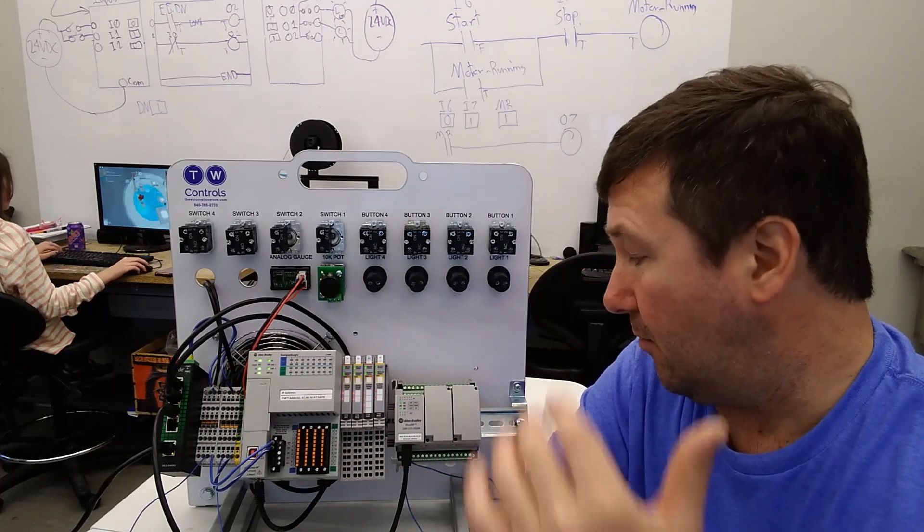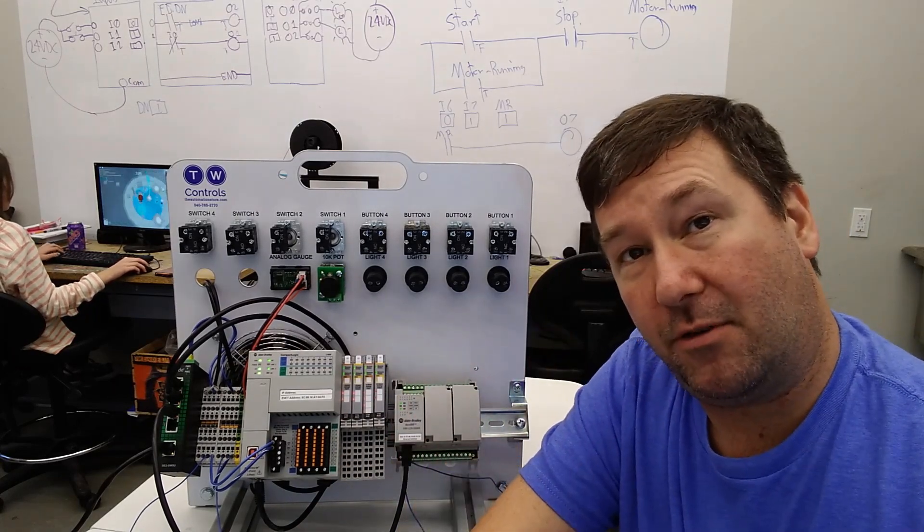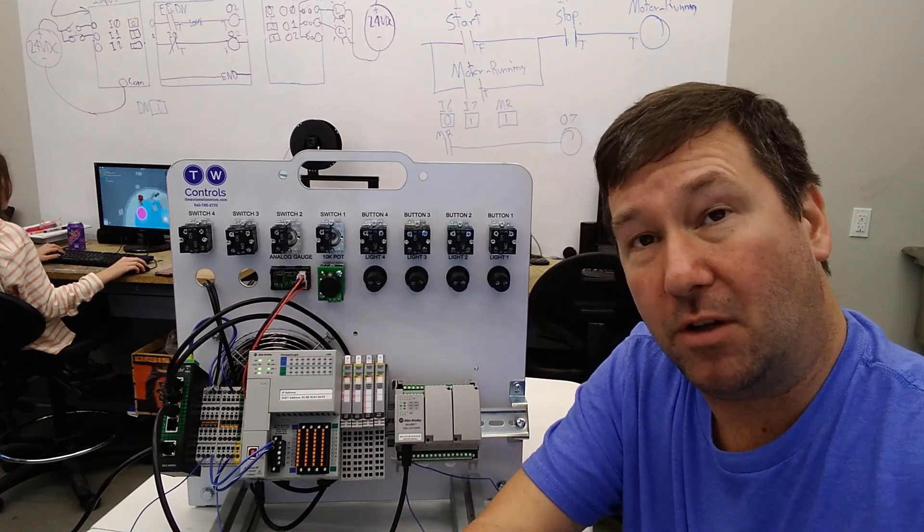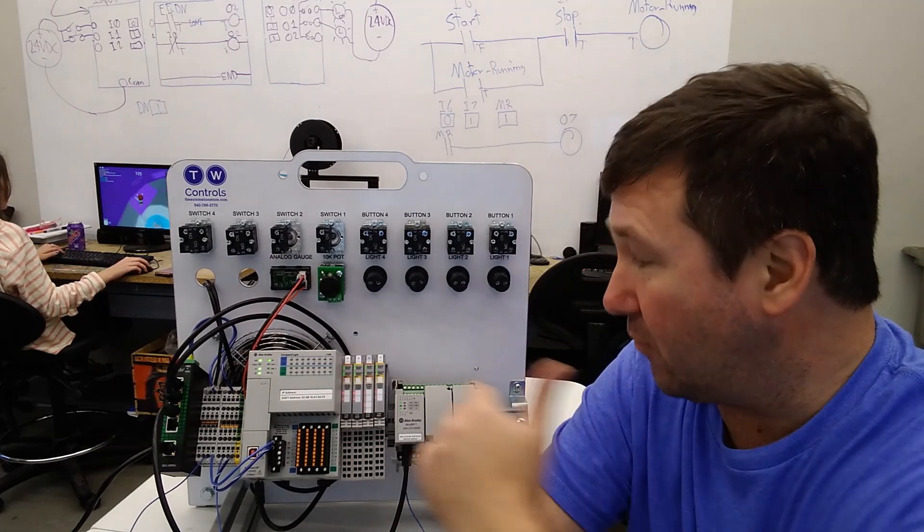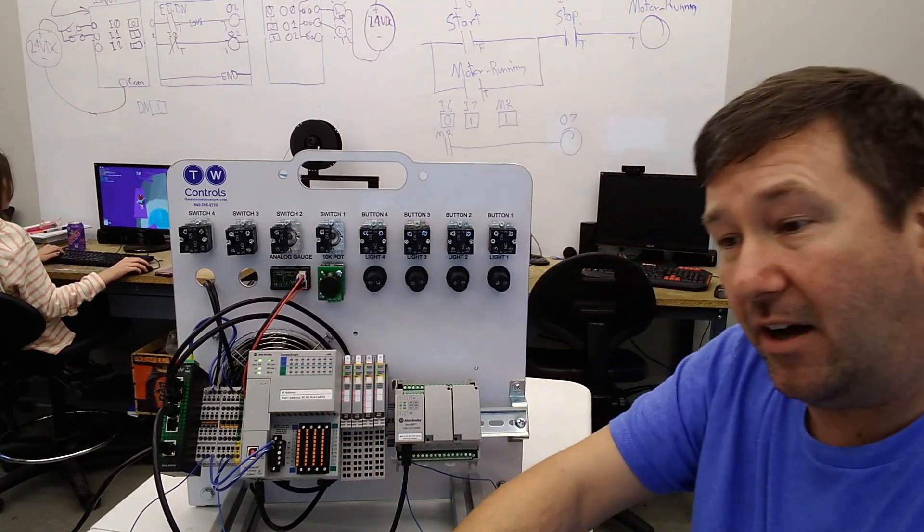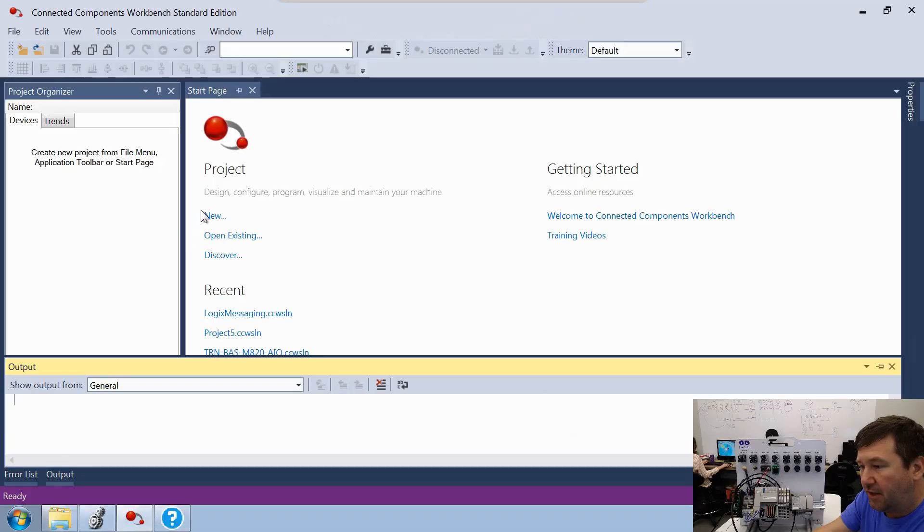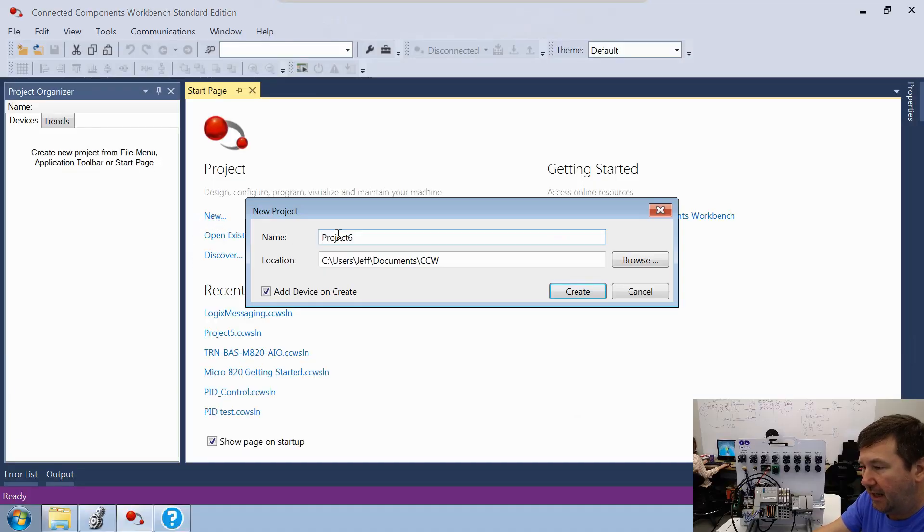We're going to be programming in both Connected Components Workbench software and in Studio 5000. Let's start with the Connected Components Workbench software since it's going to be the easier one. Really, all we're going to do is make a program with some tags in it for us to read out of the Compact Logix PLC. So let's start up a new program.